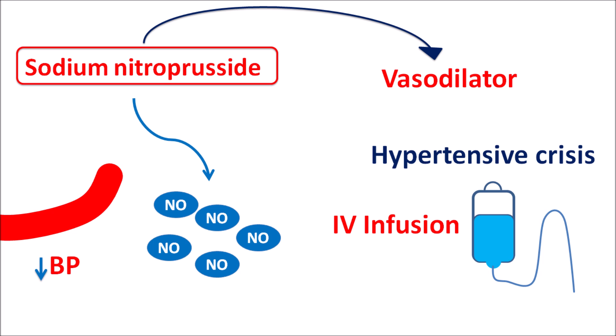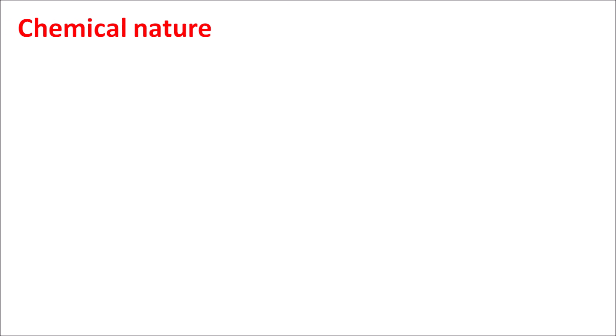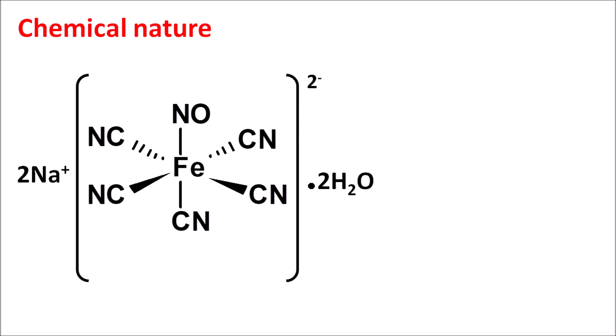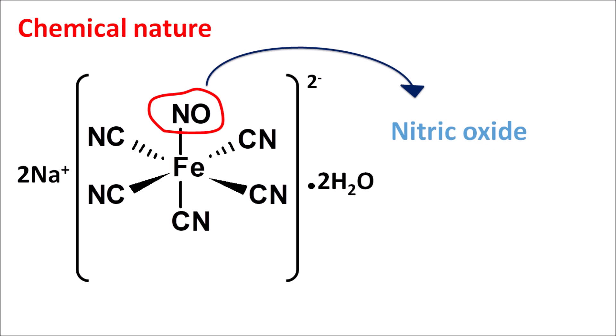In this video we are going to discuss how this drug acts, its important precautions, side effects, and doses. Regarding the chemical nature of sodium nitroprusside, looking at its structure we can observe the nitric oxide group, which is the group that will be released from sodium nitroprusside leading to vasodilatation.